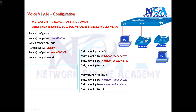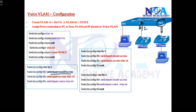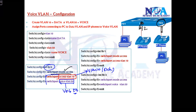For port number three, which is a member of both VLANs, we assign both commands. We say 'switchport mode access', then 'switchport access VLAN 10' — meaning this port is a member of VLAN 10, the data VLAN — and then 'switchport voice VLAN 50', meaning it is also a member of the voice VLAN. When you configure both commands on a single port, it indicates that port connects to an IP phone as well as a computer or other normal end-user devices.